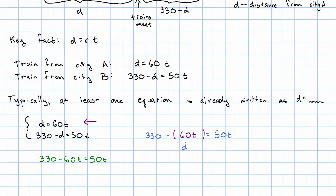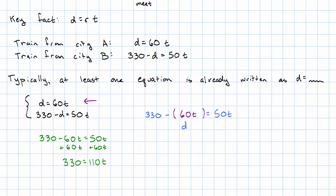What should we do? Well, we need to get all of the T's onto one side. I think it'll be easier if we add 60T to both sides. And then we'll divide both sides by 110. And we get that T is 3.